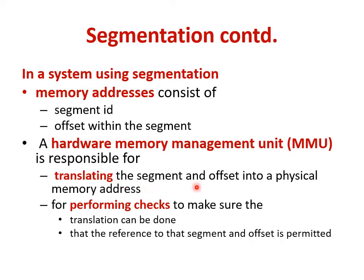The MMU translates the segment ID and offset into a physical memory address for performing memory read or write operations. It also performs checks — whether the translation can be done and whether the referenced memory location is valid. Additionally, the MMU controls permissions: certain segments may allow read and write, some may be read-only, and others may not be accessible at all. The MMU controls whether a reference in a particular way — reading or writing — is permitted.